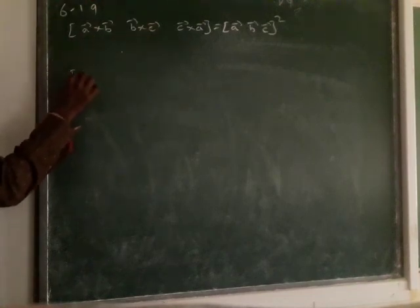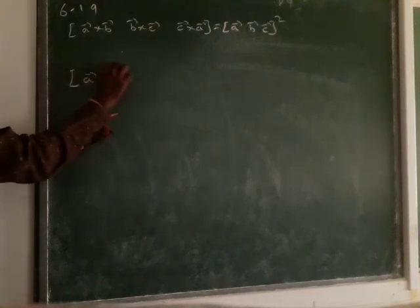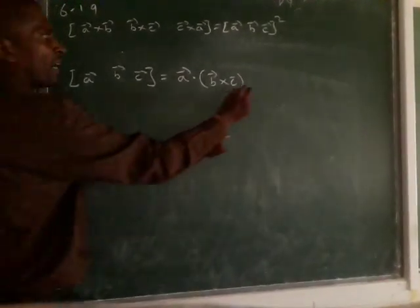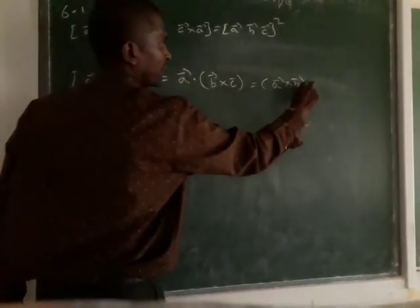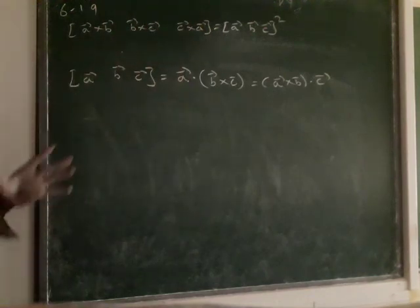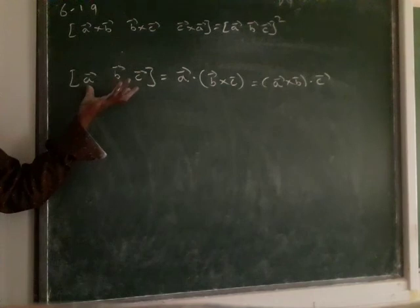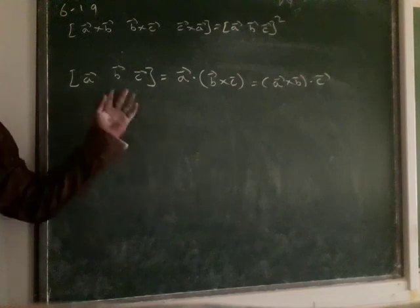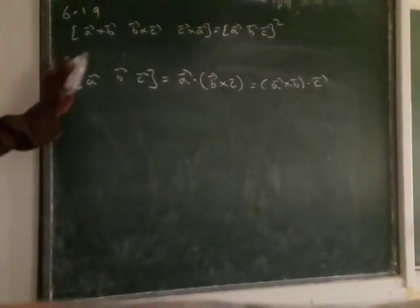Before that, just remember that if we have A vector, B vector, C vector, then you can expand the form of A vector, B vector, C vector. The scalar triple product — the same box product — you can write like A vector dot B cross C, or A cross B dot C vector. You can write any one form.